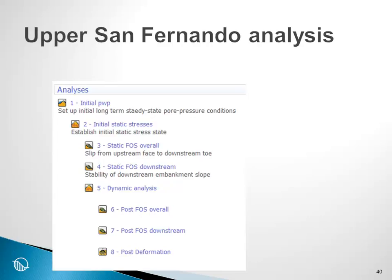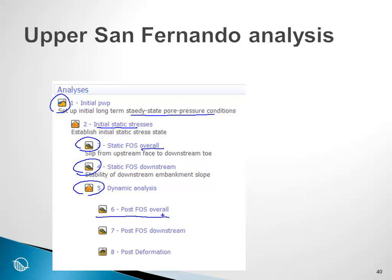Here is the GeoStudio analysis tree. We start with SEEP and set up the long-term steady-state pore pressure conditions. Then we use QUAKE or SIGMA to establish the in-situ stress state. We look at the factor of safety overall using SLOPE before the shaking. Then we use the results in QUAKE to do the shaking and look at possible zones of liquefaction and excess pore water pressure. We then use the QUAKE results in SLOPE to look at the factor of safety at the end of the shaking, both overall and on the downstream berm. Finally, we use the results in a SIGMA analysis to do a stress redistribution analysis and look at the permanent deformations.